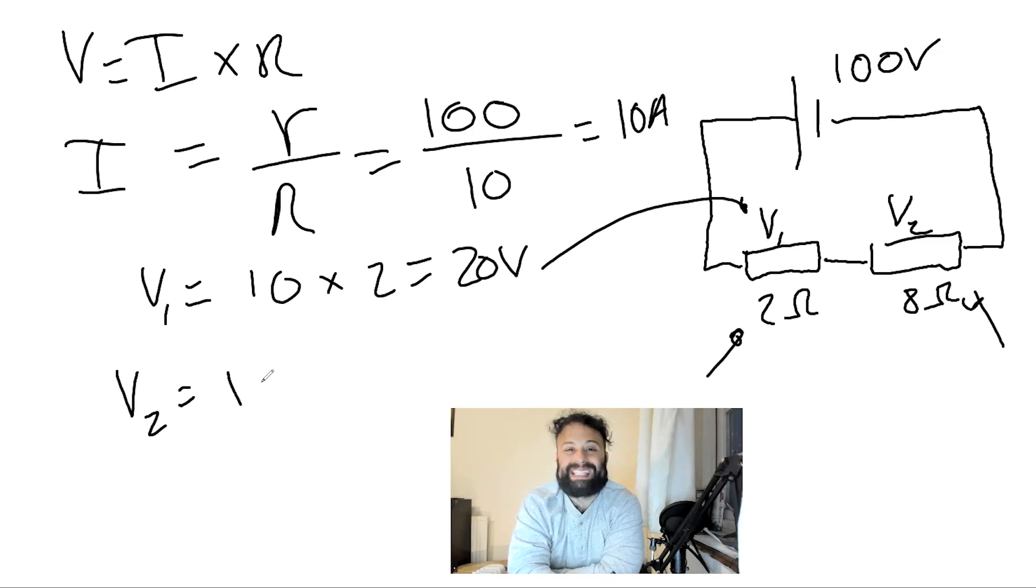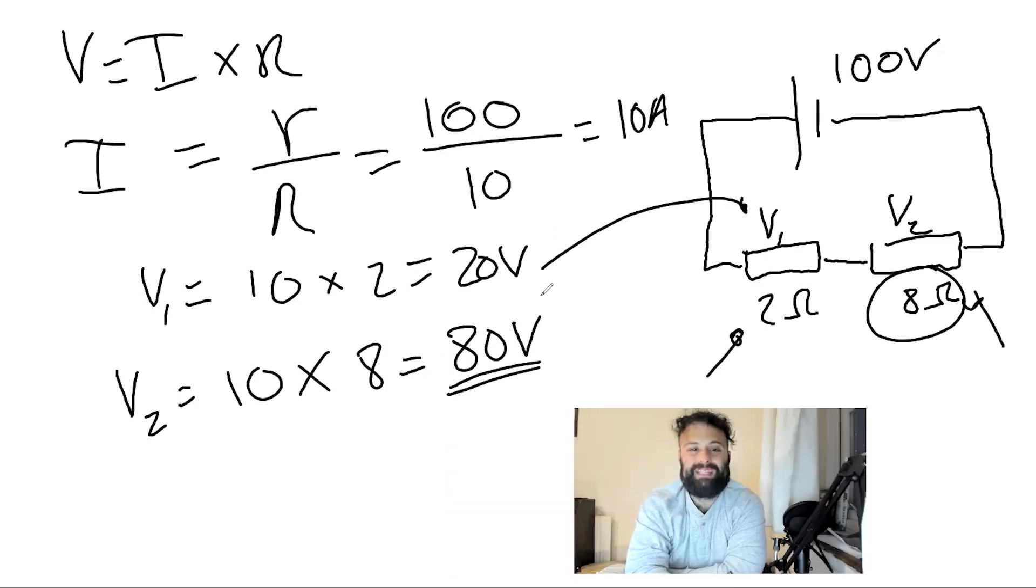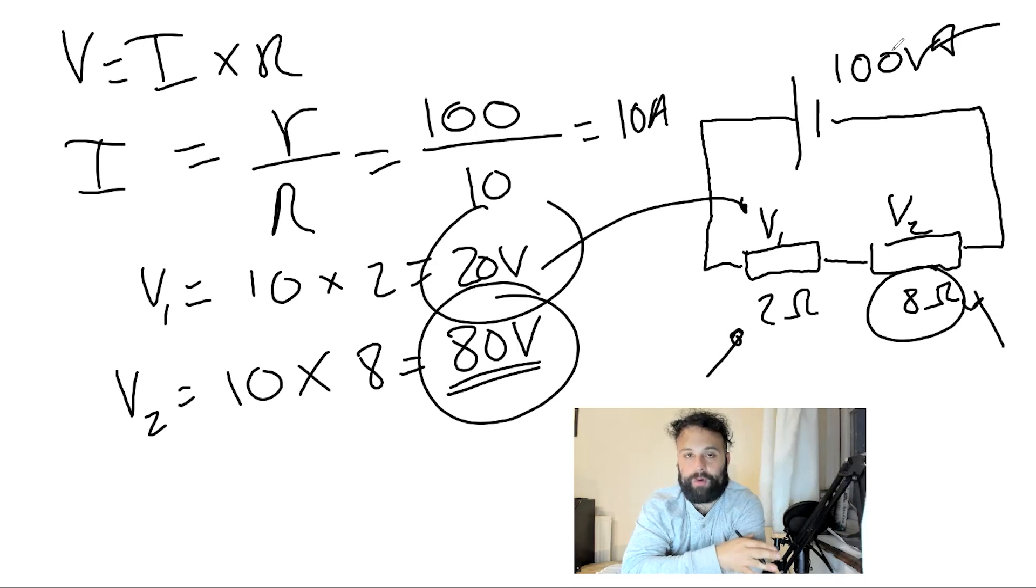V2 has 10 amps, because the current is equal throughout the whole circuit, times by the resistance of that section, which is 8. So the total is 80 volts. And this makes sense because 80 plus 20 will give me the total voltage. I'm not losing voltage. I'm not gaining voltage. The voltage is just shared depending on how much resistance each one has.